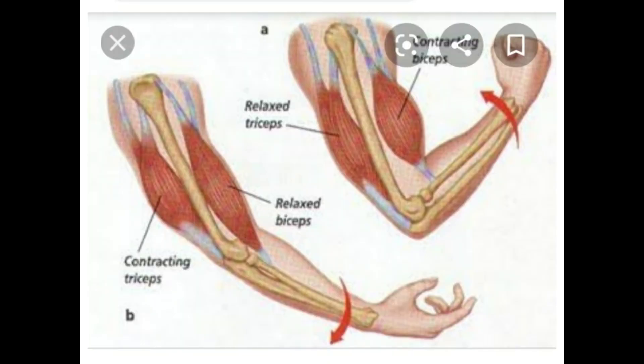Muscles work by contracting and stretching. All movable joints in our body have a pair of muscles. One of the muscles contracts to pull up the bones and the other relaxes to bring them back to the original position. Thus, a series of contractions and expansions allow the various parts of our body to eat,